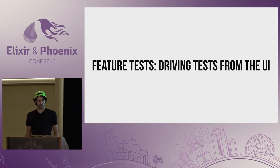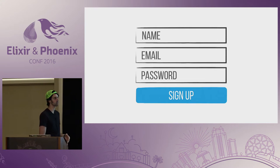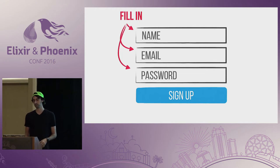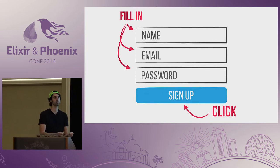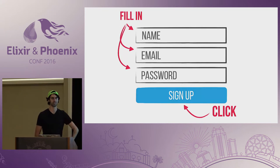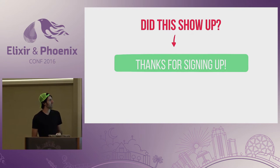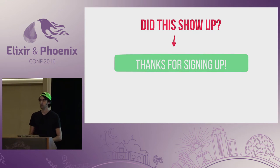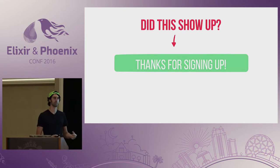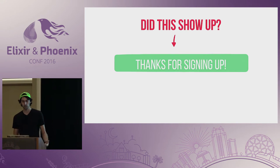So how that might look in a real web application is something like this. It might have a name field, an email field, a password field, and a sign-up button. We need to fill it in, then click the button. And then once that's all done, we need to check that something happened — make an assertion. If you're familiar with the three A's of testing, that third one is assertion. We'll look for a flash message that says 'thanks for signing up' and assert that actually happened.